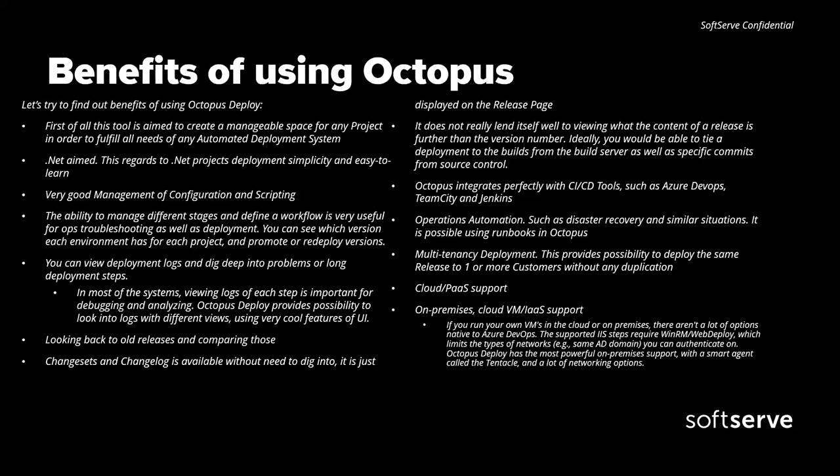Octopus provides workers and also deployment agents which can be cloud or on-premise. It provides different kinds of agents called tentacles — there are at least two required possible types: listening tentacles and polling tentacles. You can create agents in order to deploy applications using different logic.